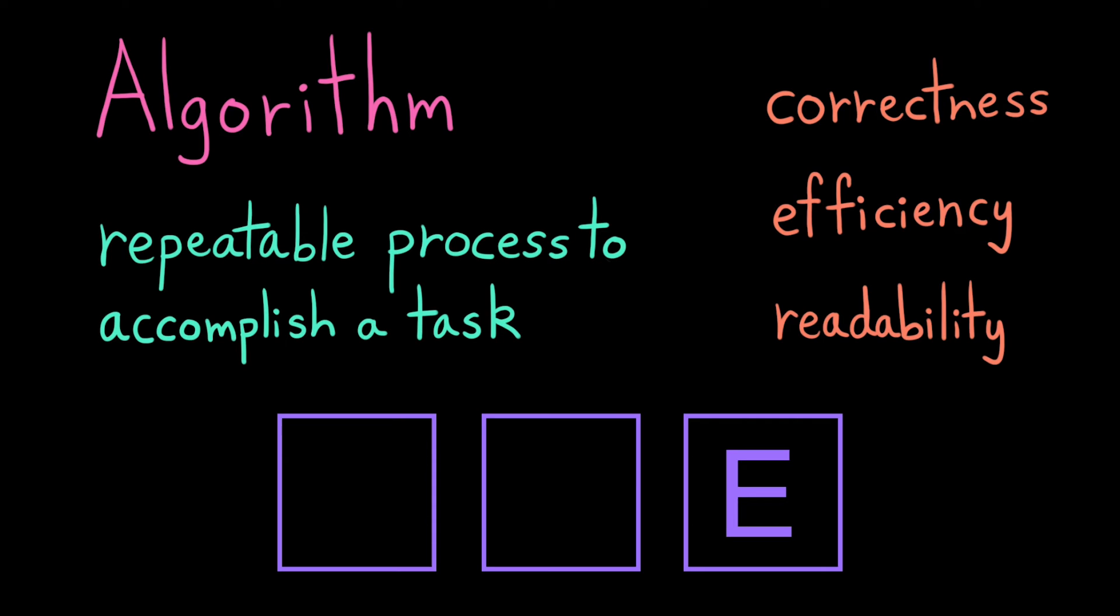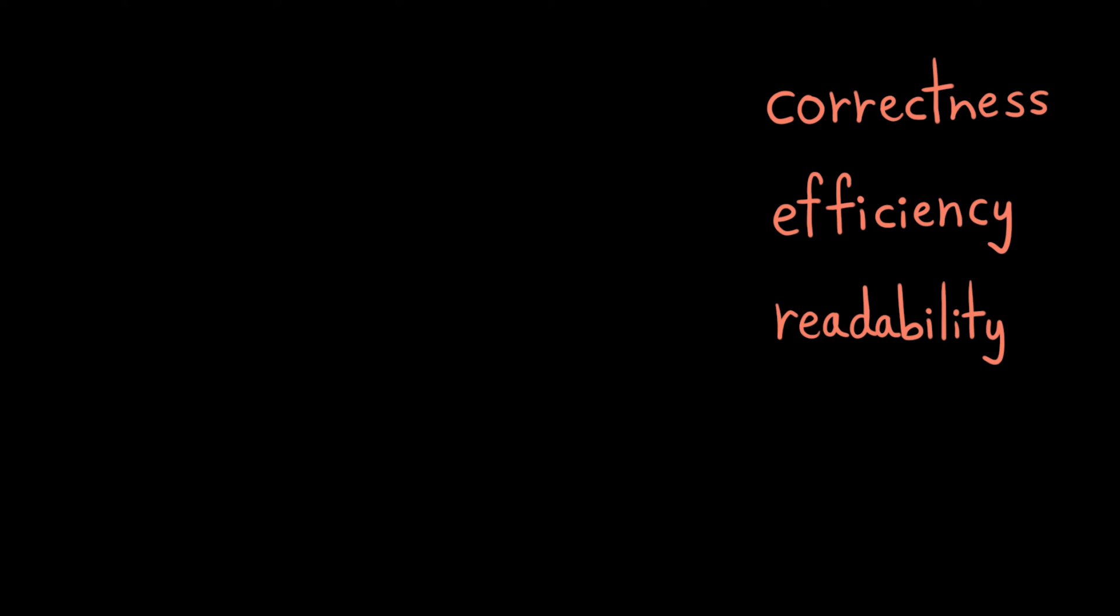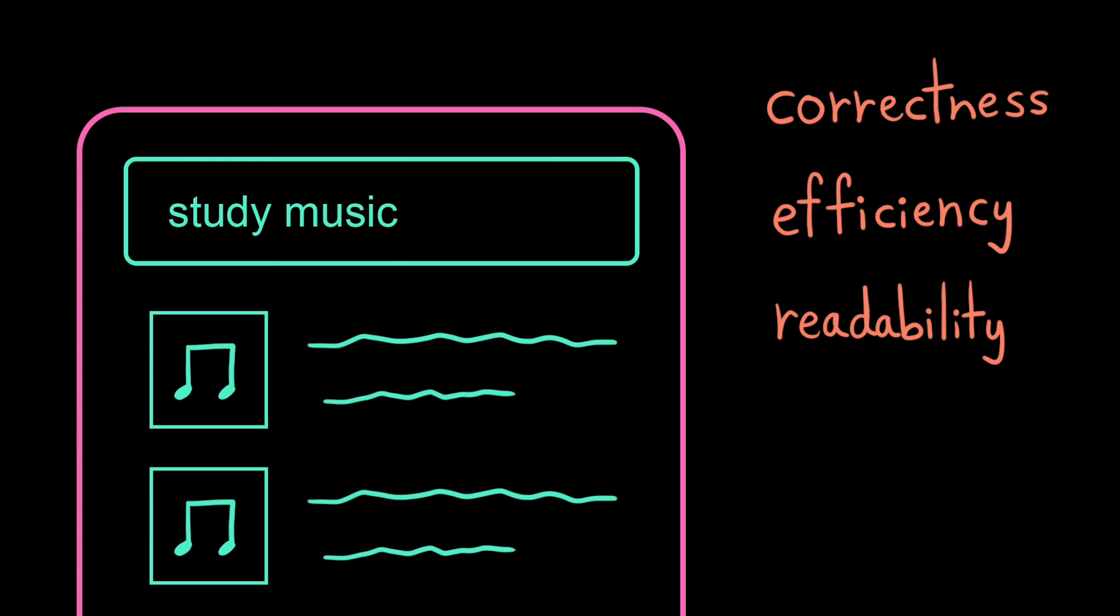There's often not an objective best solution. It's all in how you evaluate the trade-offs. If I design a search algorithm, and when someone searches for study music, I return playlists of really intense German bass, then the correctness of my algorithm is probably a bit off.